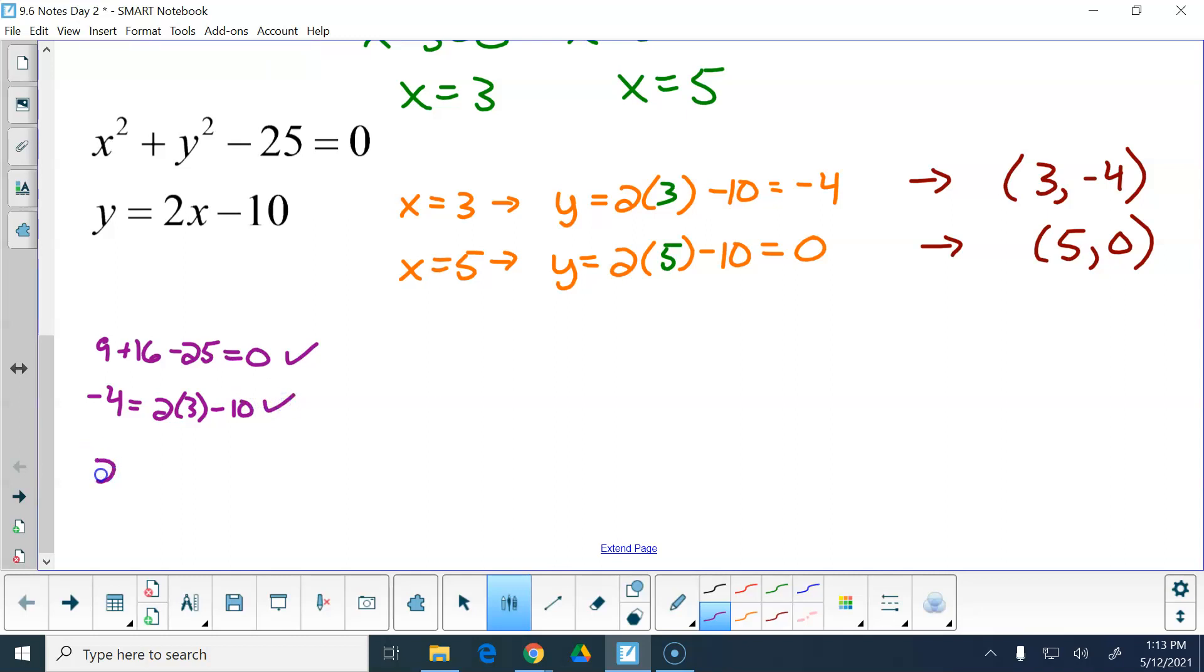5 squared is 25. 0 squared is 0. 25 plus 0 minus 25 is 0. 0 is 0. 2 times 5 is 10, minus 10 is 0. Check out both of those. So these two intersection points are it. Questions, comments, concerns, clarifications.